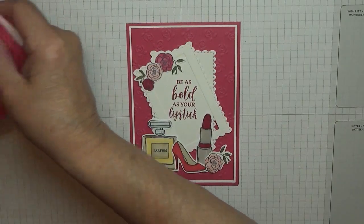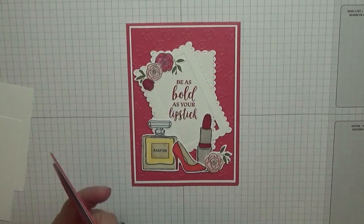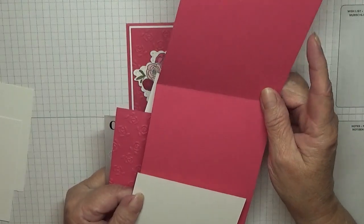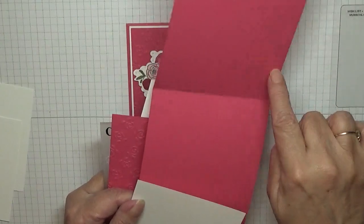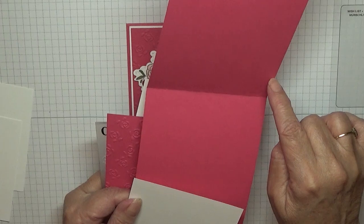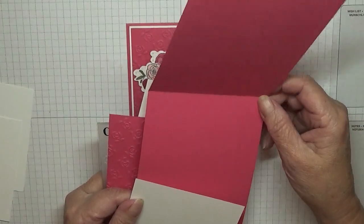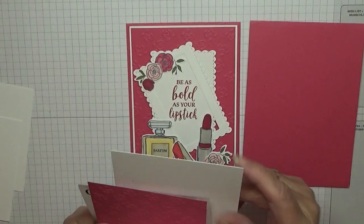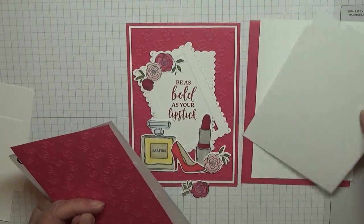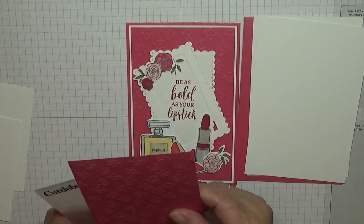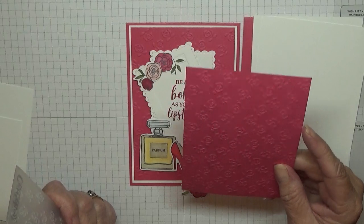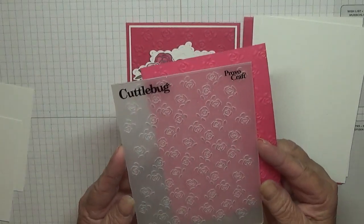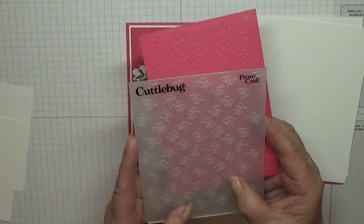For the card stock you will need a pink card base, lovely lipstick of eleven and three quarters by four and one-eighth, scored at five and seven-eighths folding in half and burnished. Two pieces of white at five and five-eighths by three and seven-eighths, another piece of lovely lipstick at five and a half by three and three-quarters. I've already run it through an embossing folder, this is a Cuttlebug embossing folder and it's got miniature roses on it.